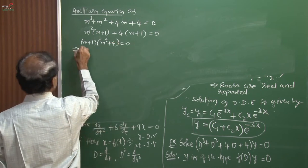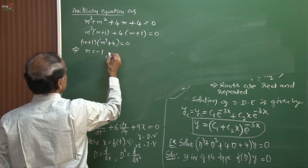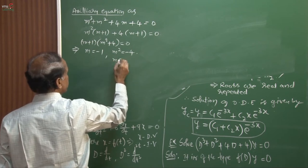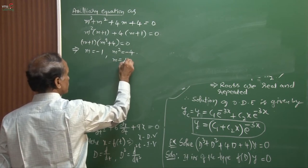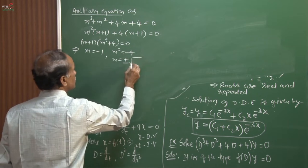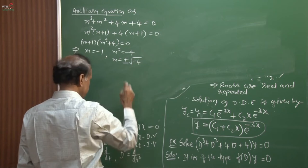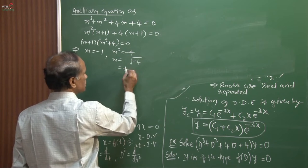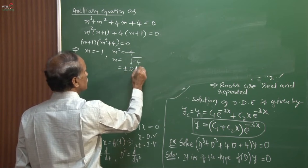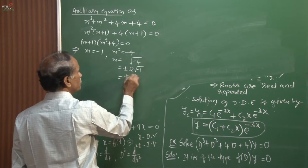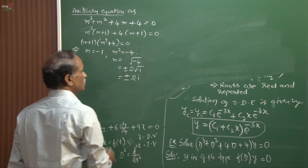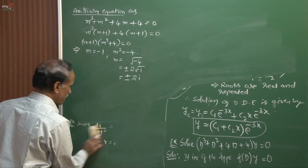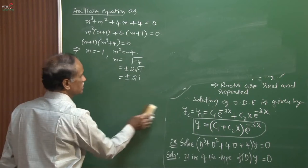Factoring gives (m + 1)(m² + 4) = 0. Then m = −1 from the linear factor, and m² = −4 from the quadratic factor. So m = ±√(−4) = ±2√(−1) = ±2i. Since i² = −1 (the imaginary unit from complex numbers), we get m = ±2i.